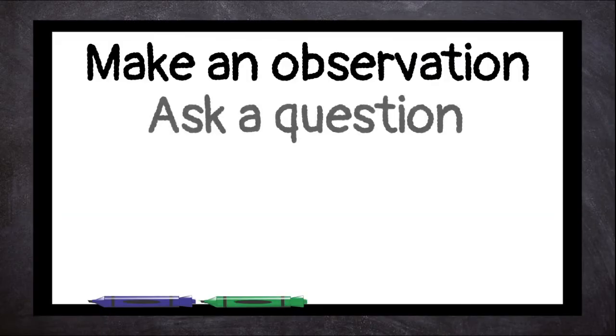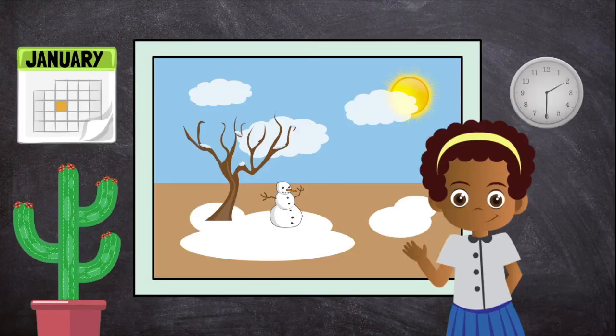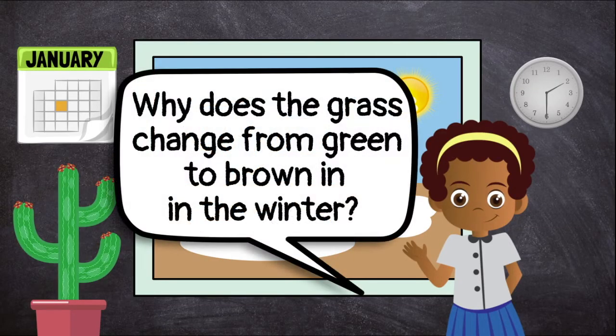The second step is to ask a question. What do you want to find out? Maybe your question is, why does the grass change from green to brown in the winter? Your question should be something you do not already know the answer to.